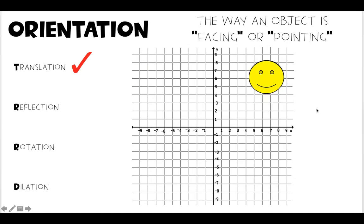Let's look at a reflection. If we reflect our shape over the x-axis, our original smiley face looked right, it looked like the correct smiley face. But now we reflected it and we have this upside down smiley face. So is it facing or pointing the same direction? No, right? Because now our new image is upside down.